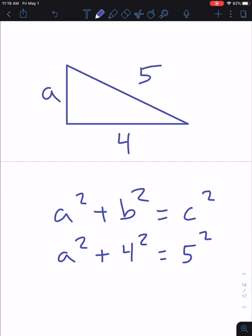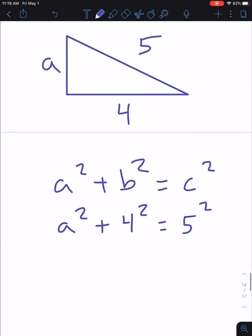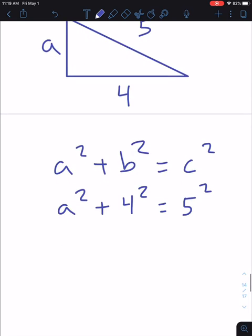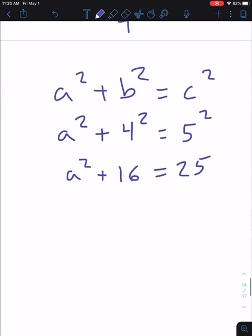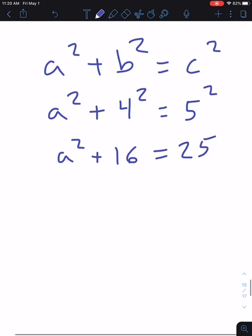Now we can start solving it. We still don't know what a squared is. 4 squared is 16 and 5 squared is 25. Now from here on out, this is a regular single variable equation. It's just an equation with one variable we've worked with these before.